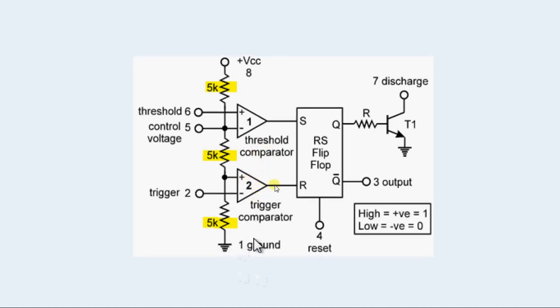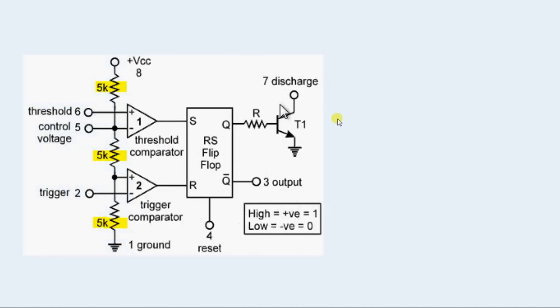Pin 1 is ground. Pin 4 is reset and it enables us to manually reset the flip-flop. Pin 3 is output and pin 7 is discharge.